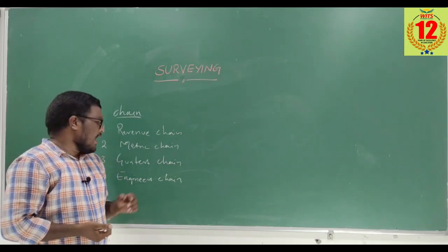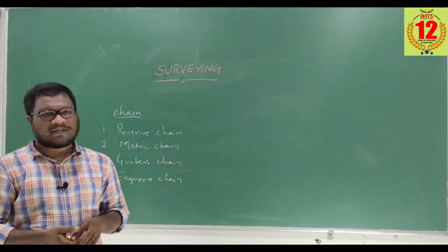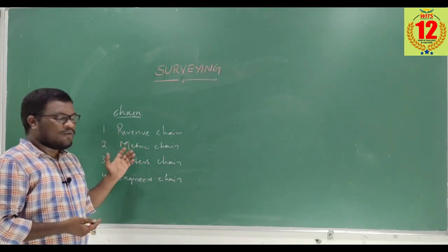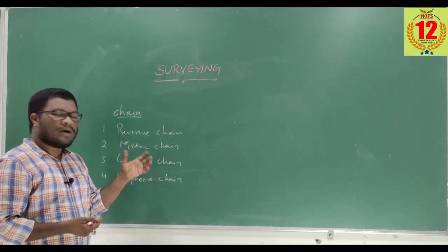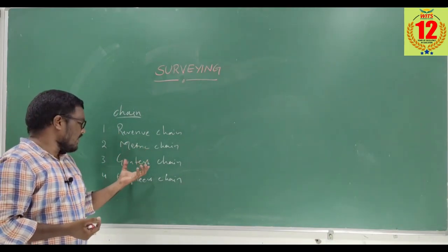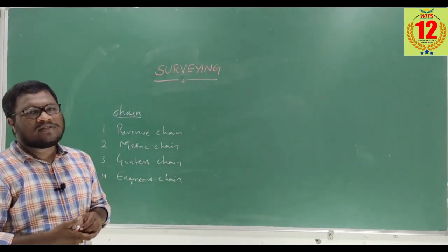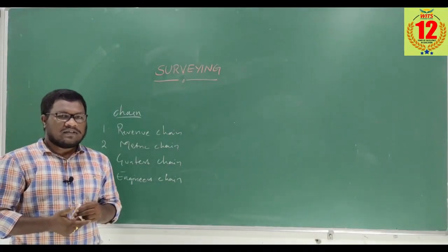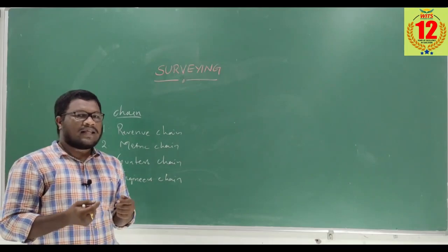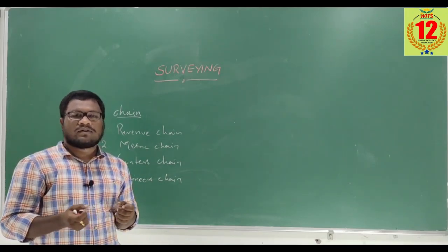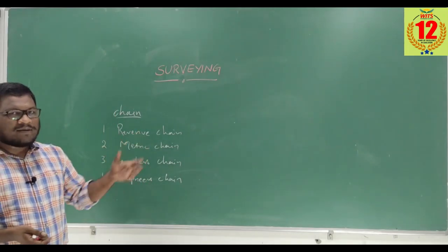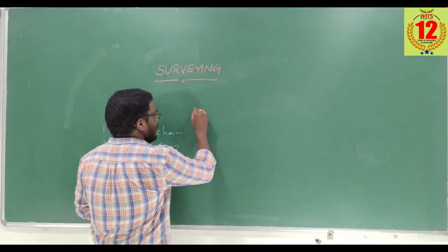These four types of chains are not the same — their purpose differs. For some activities we use a revenue chain, for others a metric chain, Gunter's chain, or engineer's chain. The lengths of these chains vary and no two chains are of the same length. The link length — the distance between two links — is also different for each.